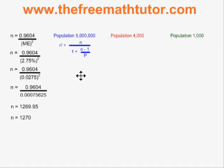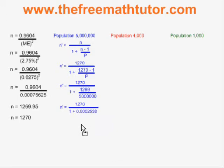Filling this in for a population of 5 million, the simplification will look like this. We plug the n equals 1270 into two different places and the p equals 5 million. And gradually as we simplify, we end up with a rounded off value of 1269.68.